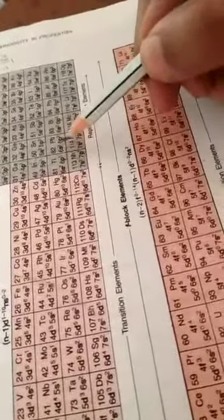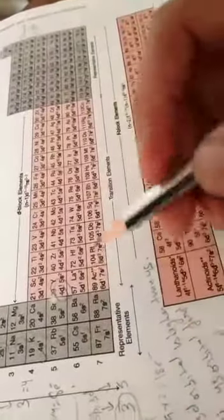After 58, at 72, then our 5d starts. 5d2, 5d3, 5d5, 5d5, 5d6, 5d7, 5d9, 5d10. When 5d is complete, after that which one started? P. 6p1, 6p2, 6p3, 6p4, 6p5, 6p6. So in this 6th period, we fill the 4 orbitals: 6s, 4f, 5d and 6p.